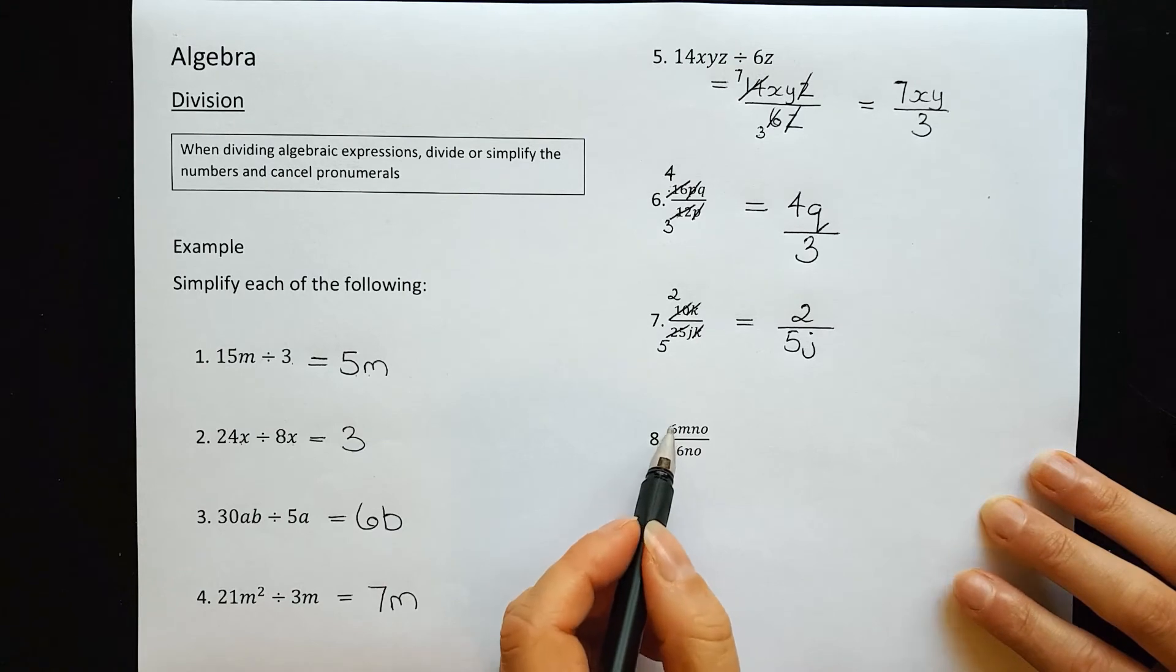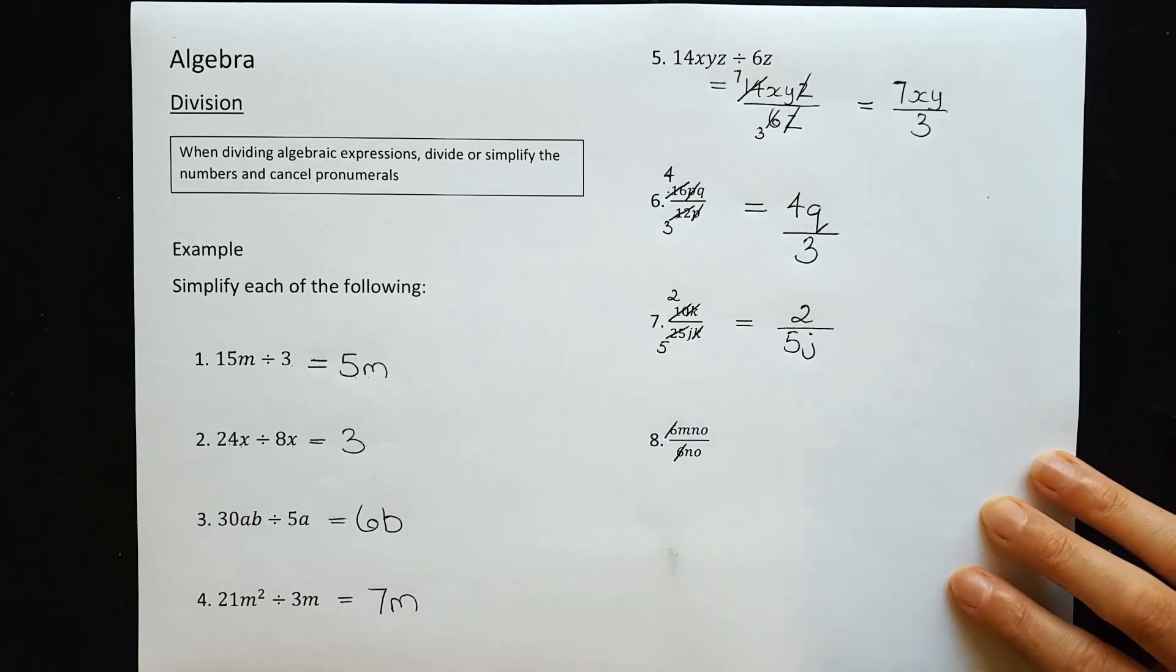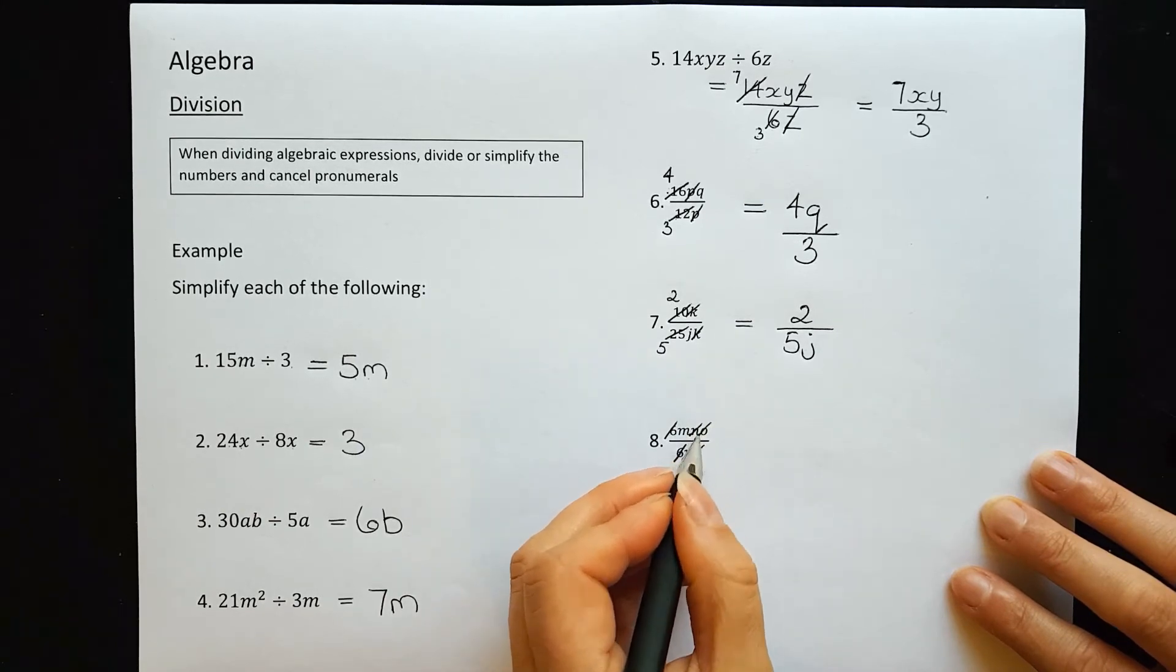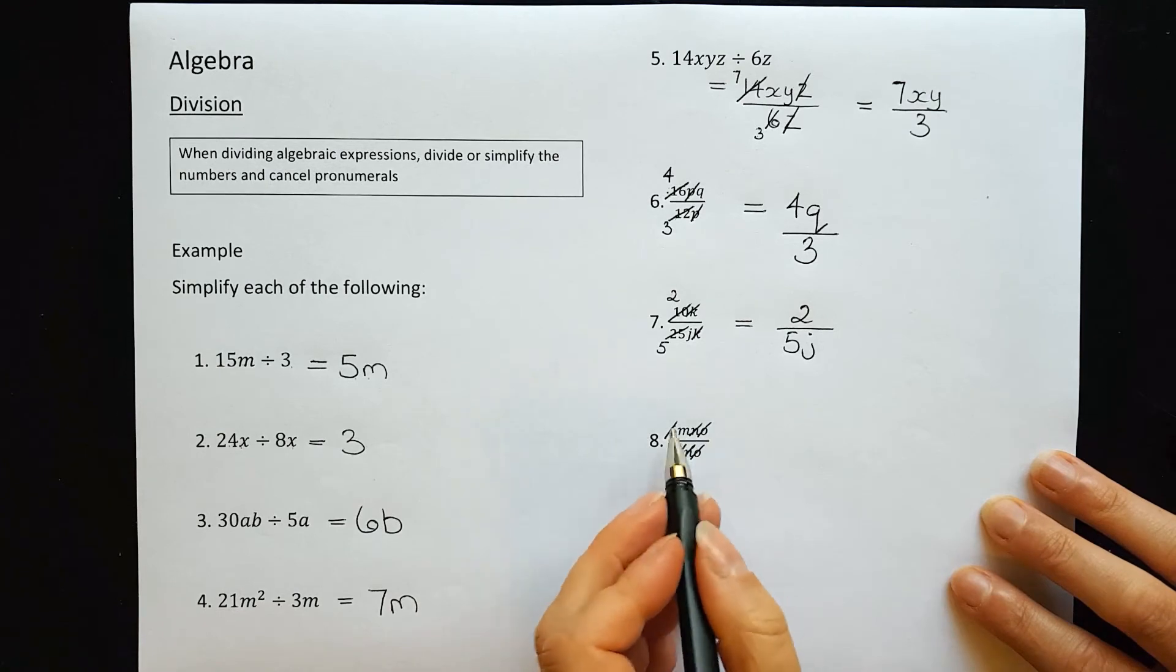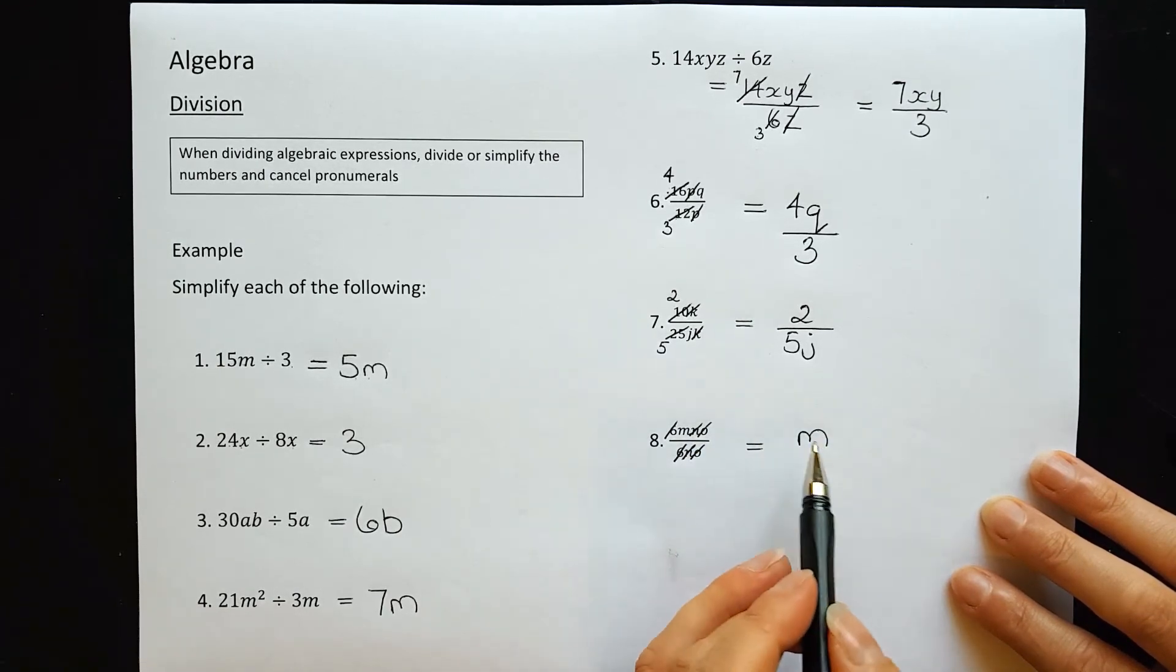Question 8: 6 on top and 6 on bottom can cancel completely away. They leave ones, but we don't need to write the 1. We can also cancel n from bottom and top, and o from bottom and top. All that's left is the m on top. That would be m over 1, but m by itself is a more simplified way to write it.